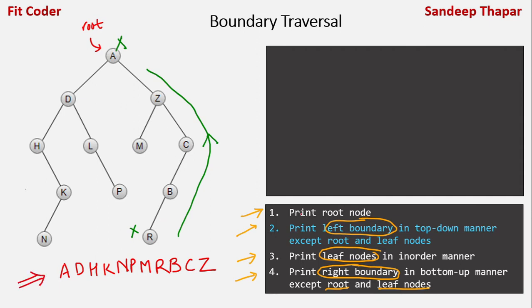Now let's look at each step individually. The first step is simple: we print the root node, so we print A.